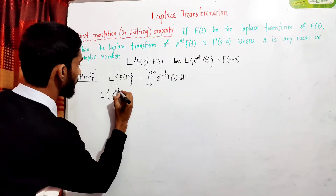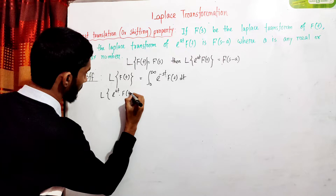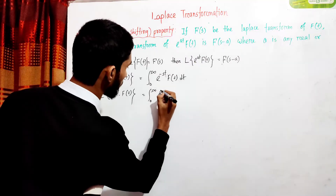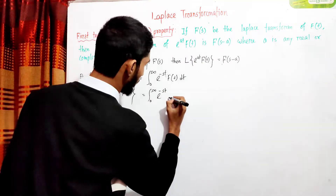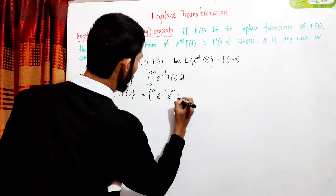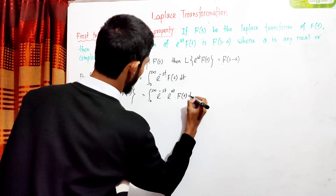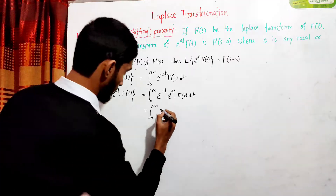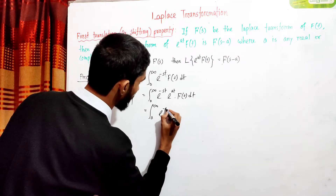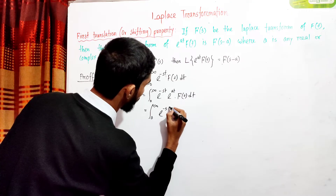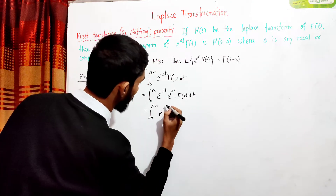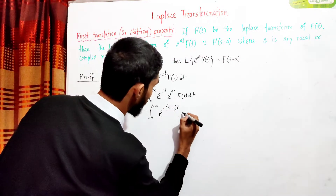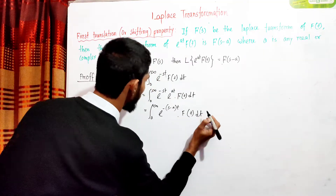Now what about e^(At) into f(t)? The Laplace transform of e^(At)·f(t) is the integral from 0 to infinity of e^(At) times f(t) dt. We then take e^(minus s·t) and combine the exponents, pulling out minus t as a common factor, giving us e^(minus (s minus A)·t) times f(t) dt.